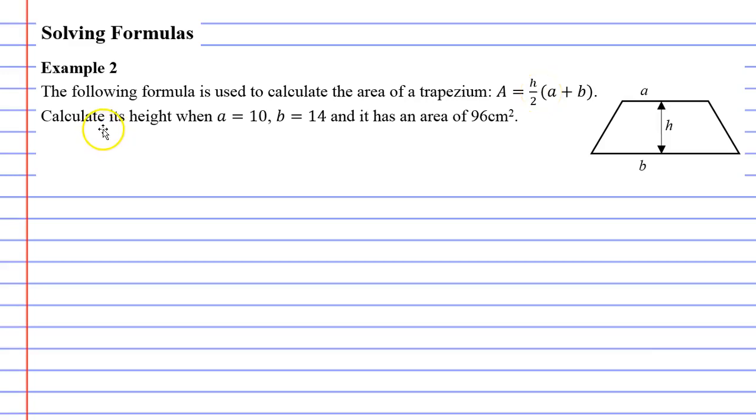It wants us to calculate its height when a equals 10, b equals 14, and it has an area of 96 centimeters squared.